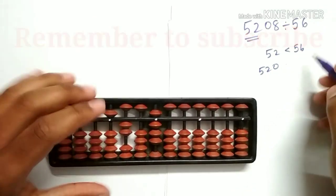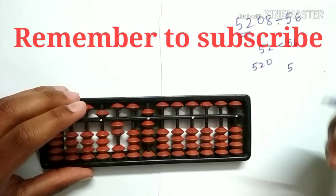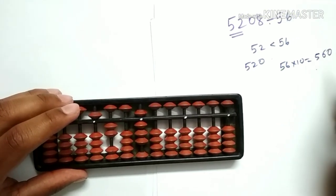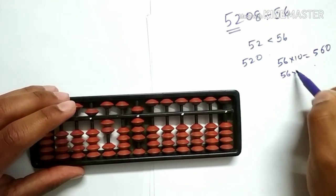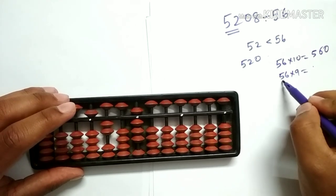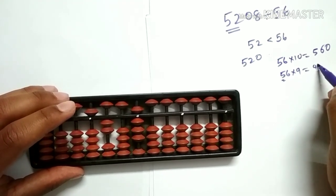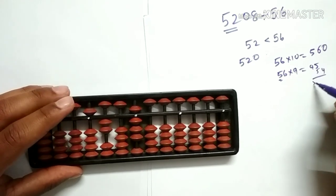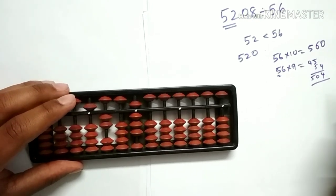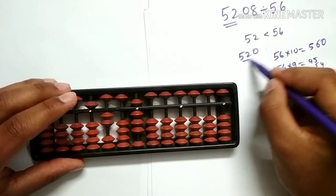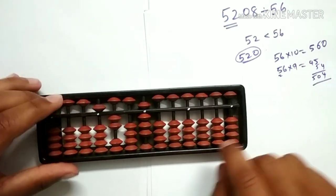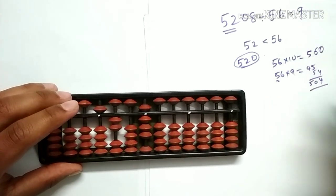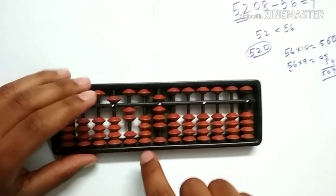As we can see, let's come from the ending: 56 into 10 is 560, 56 into 9 is 504. 504 is less than 520, so let's use this. Let's write 9 here and subtract 504 from our dividend.